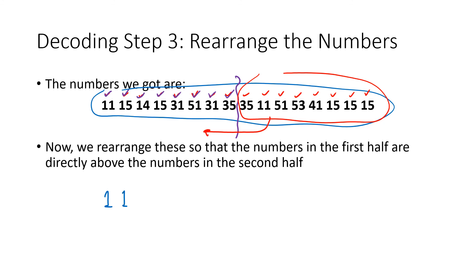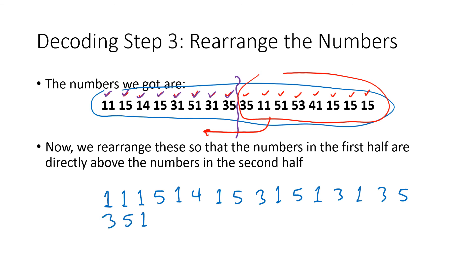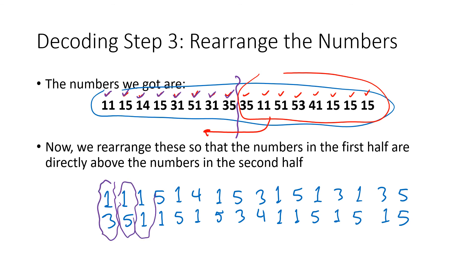I write out the first half of numbers on top and the second half underneath, lining them up. The first half is: 1,1,1,5,1,4,1,5,3,1,5,1,3,1,3,5 and the second half goes beneath. Now I think of those aligned vertical pairs as my row and column coordinates to look up in the Polybius square to recover the original message.